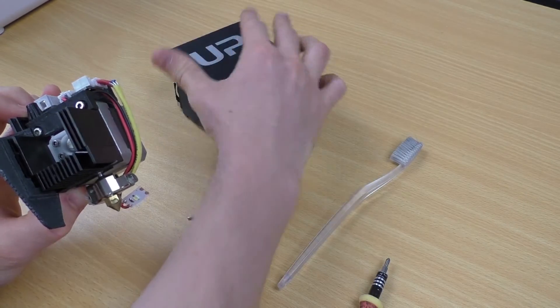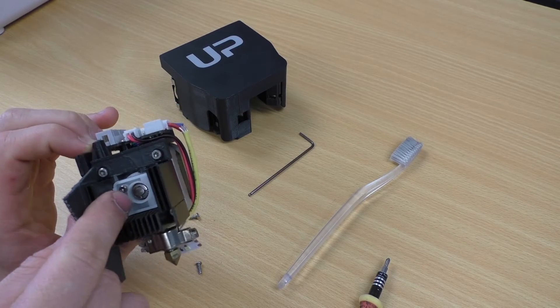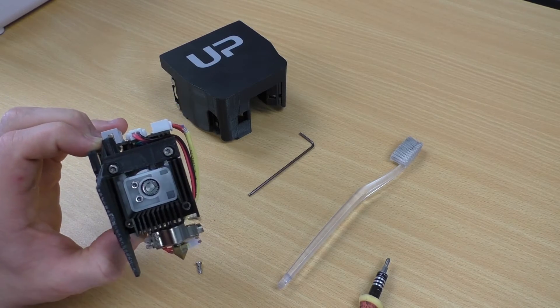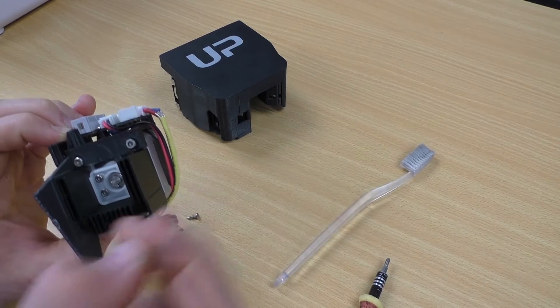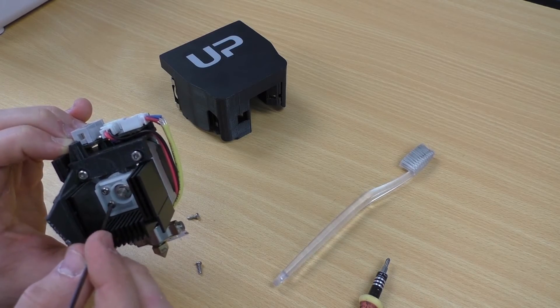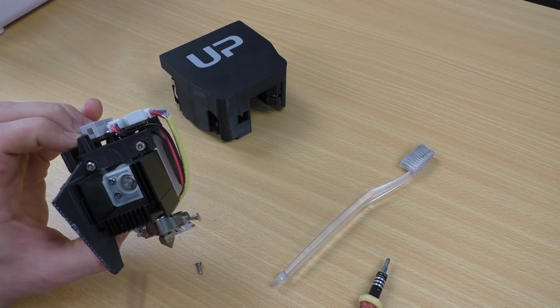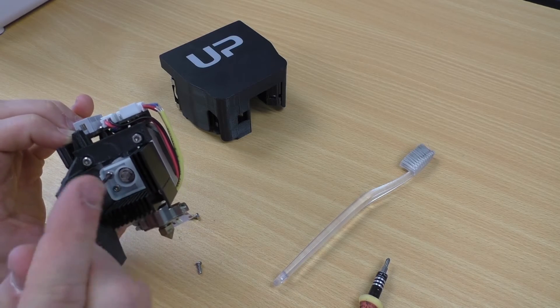Now underneath we have this white cover over the drive gear that we can see inside the hole. So we're going to remove that, that's got two allen key type screws so you should have received an allen key of this size with your printer. We're going to undo those and take those out.